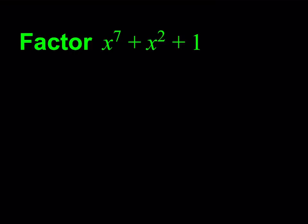Does this method always work? Pretty much almost all the time if you have a polynomial of this kind. So I'm going to start with the highest power of x, which is x to the 7th, and subtract x to the 4th power. There is a reason why we have the difference of 3 here — it'll be clear in a little bit. If I'm subtracting it, I'm also adding it, which gives us x to the 4th plus x squared plus 1.